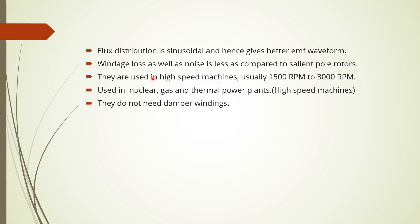Non-salient pole machines operate at high speeds, normally from above 1500 rpm up to 3000 rpm, compared to salient pole machines which operate below 1500 rpm. They are mainly used in nuclear power plants, gas power plants, and thermal power plants. These machines are generally known as turbo alternators. The flux distribution is uniform, so they give a better EMF waveform, with lower losses and less noise. They do not need damper windings because the oscillations during changing load conditions are automatically damped out by the windings.